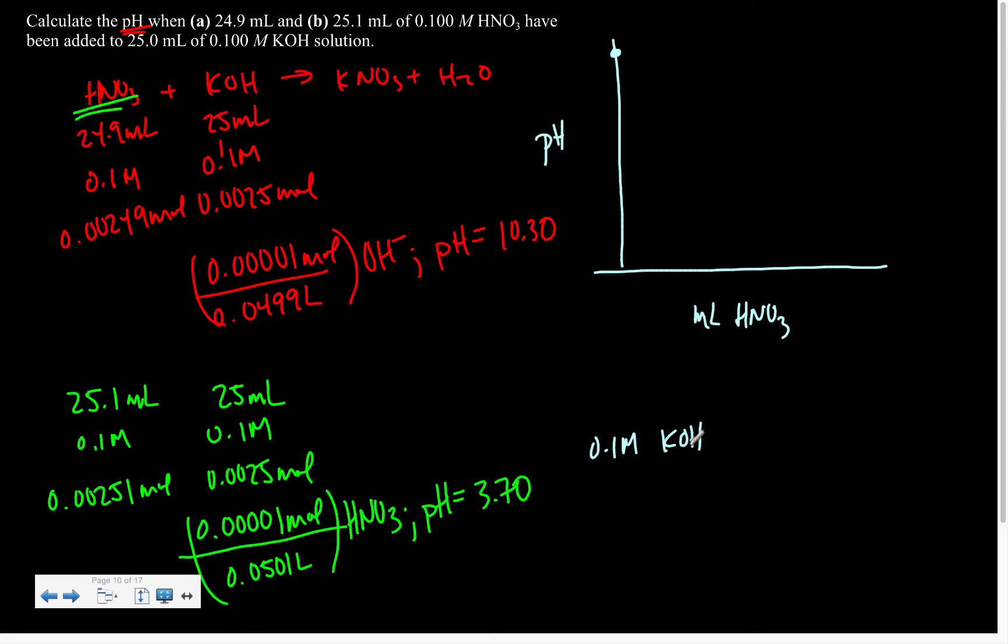And if I have 0.1 molar KOH, that means I have 0.1 molar hydroxide, so 10 to the negative 1 molar hydroxide, which means pOH of 1 and then pH of 13. Since this is a strong acid strong base, we're going to get very little change in pH on the front end till we get to our steep change.